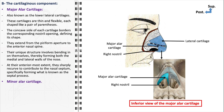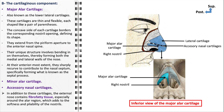The nasal structure also includes minor alar cartilage and accessory nasal cartilages, which play a role in refining the shape and structure of the nose, particularly in the ala region, providing additional support and contouring. In addition, the external nose contains fibro-fatty tissue, especially around the ala region, which adds to the softness and pliability of the nostrils. This fibro-fatty tissue is crucial for the comfortable movement and functionality of the nose, particularly in facial expressions and breathing.